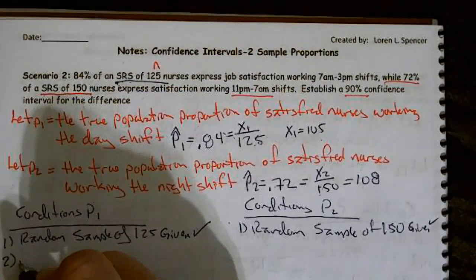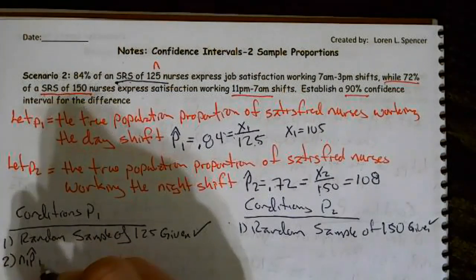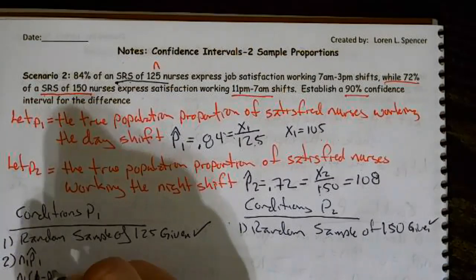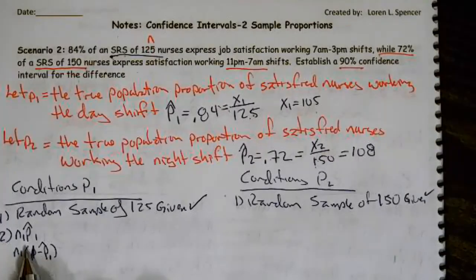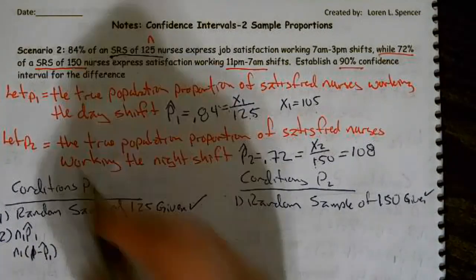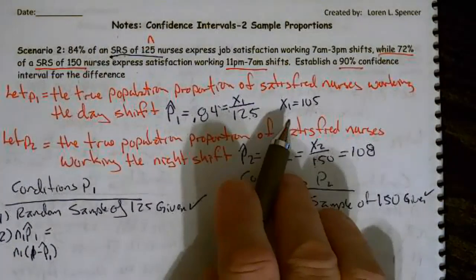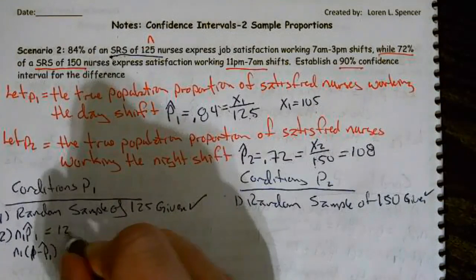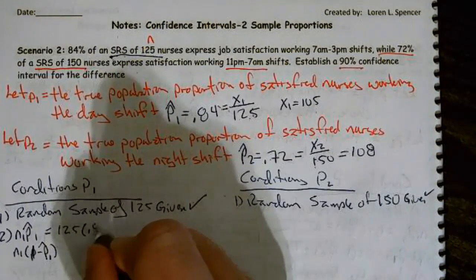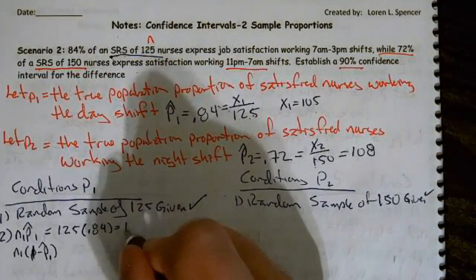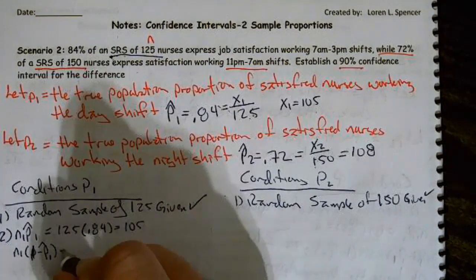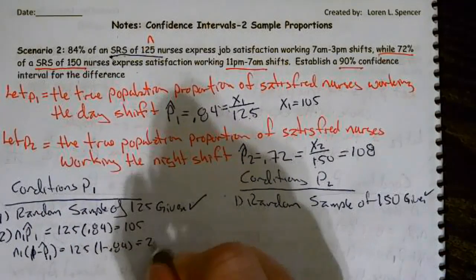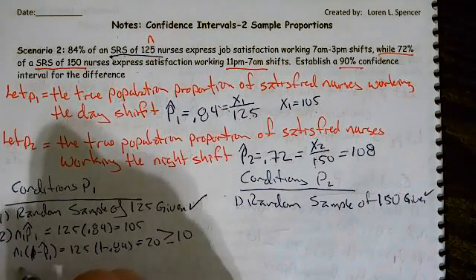Then, we have to do n1, P hat 1, and n1 times 1 minus P hat 1. Now, remember, these have the hats, because we're working with the confidence intervals. Well, what is that? In this case, we're going to go, oh, that's what we already did. We just checked this out earlier. We went 125 times P hat 1 is 84. And we got 105. And we're going to do 125 times 1 minus 0.84. And we're going to end up getting 20 greater than or equal to 10. And we're going to go, okay, to use the normal approximation.